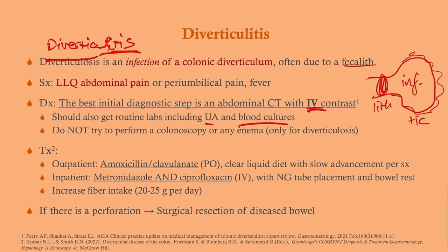For treatment, assess how the patient looks. If they appear well, are not septic, have only a low-grade fever, and are generally healthy, manage them outpatient: prescribe amoxicillin-clavulanate (Augmentin) orally, advise bowel rest with a clear liquid diet — jello, juices — and advance the diet as symptoms improve. If they are elderly, in severe pain requiring morphine, institutionalized, or unreliable with medications, admit them for IV antibiotics: metronidazole and ciprofloxacin.